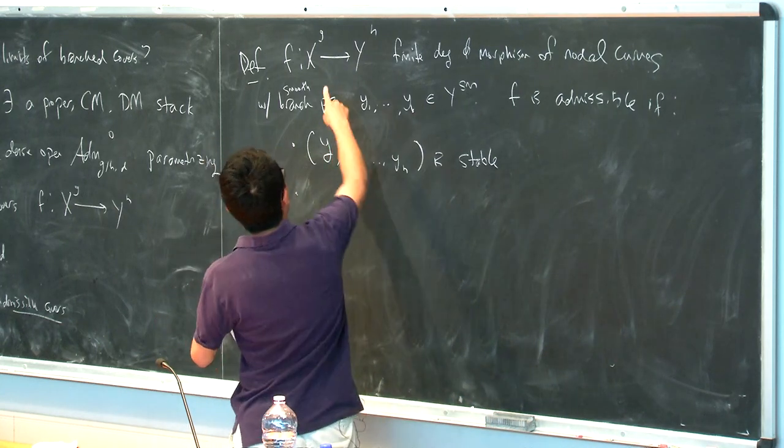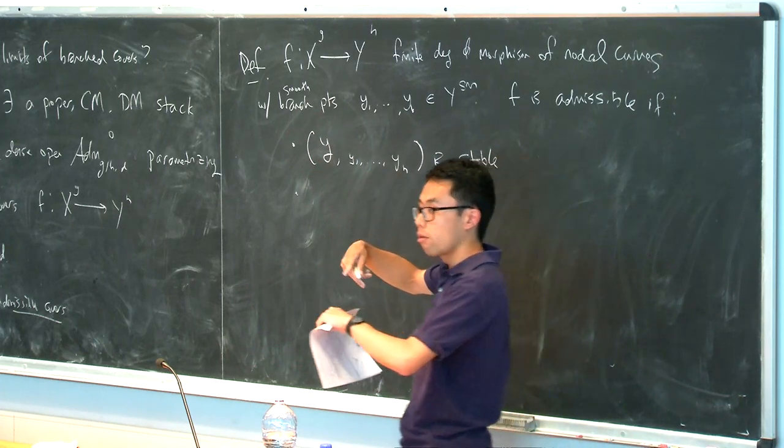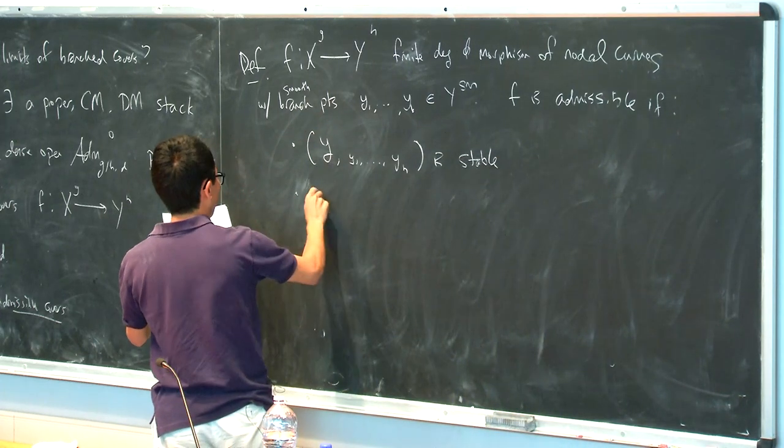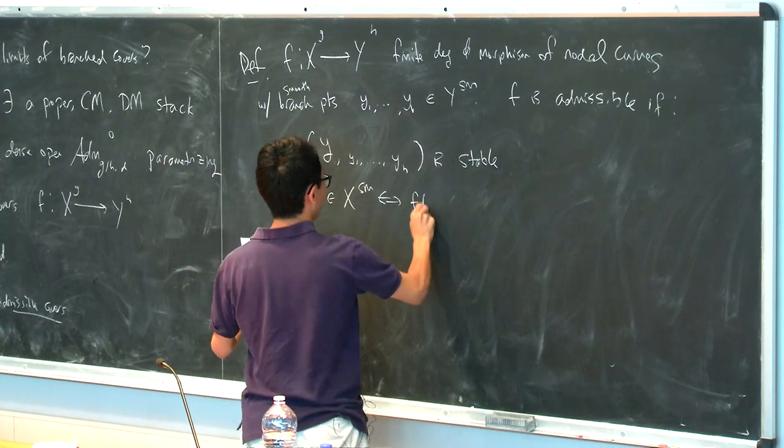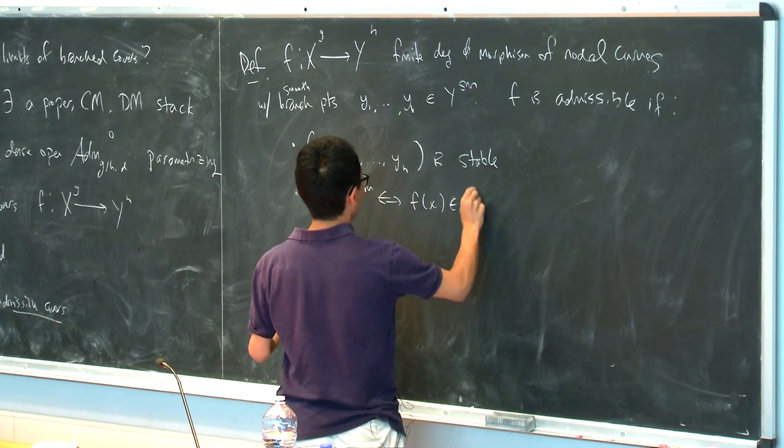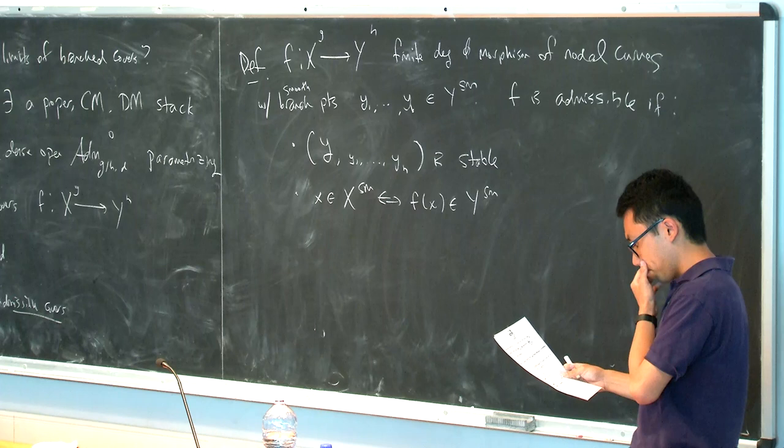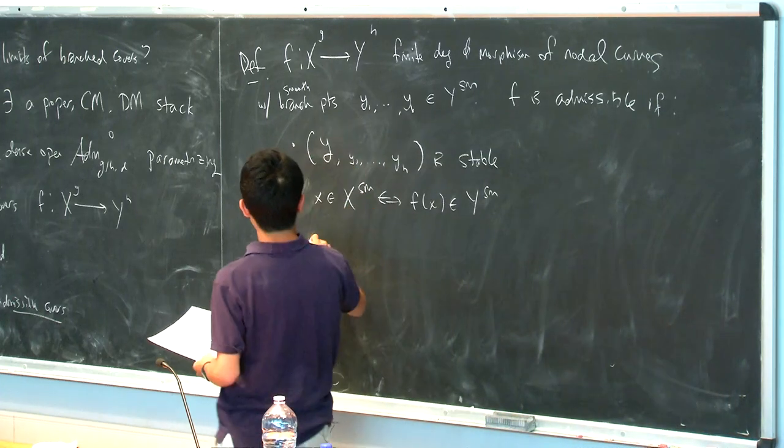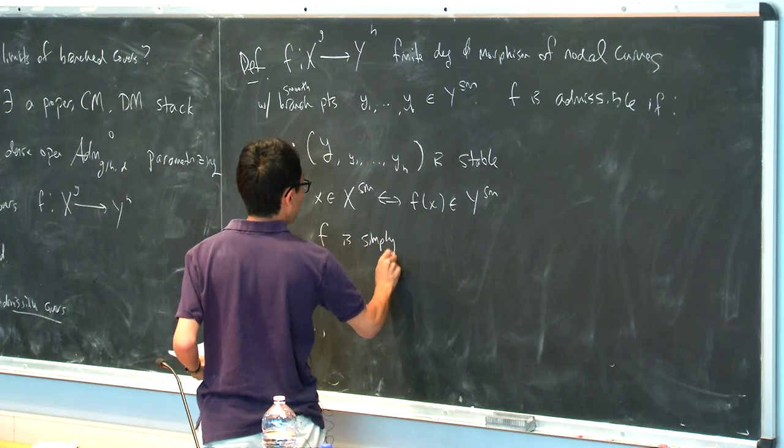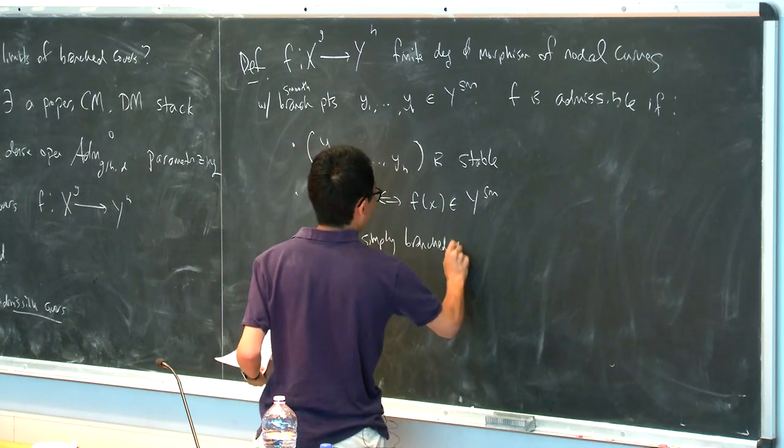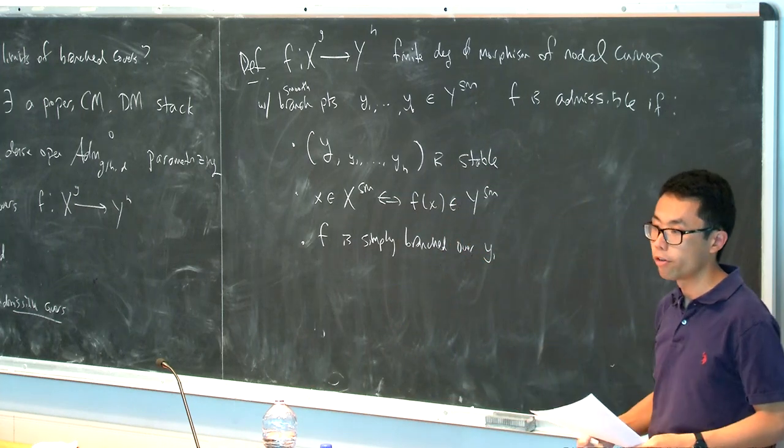So one is that when I take the cover with the base with all of its branch points, I want a stable curve. Y union the yi is stable. So two, I want f to map smooth points to smooth points, and nodal points to nodal points. So I'll just write this in the following compact way. So x is smooth if and only if its image is smooth. Okay. I want f to be simply branched over the yi.